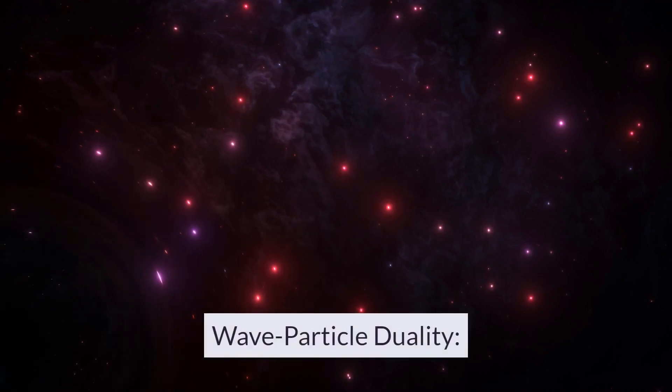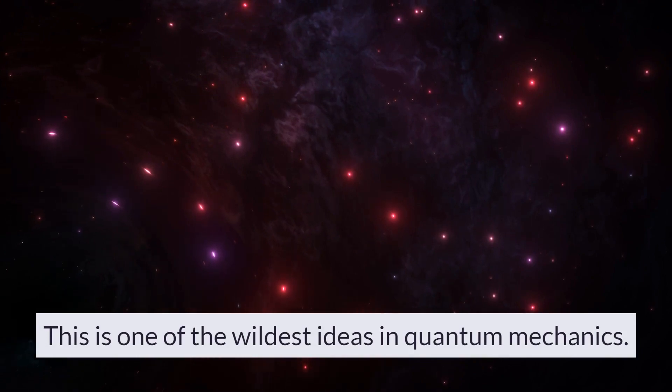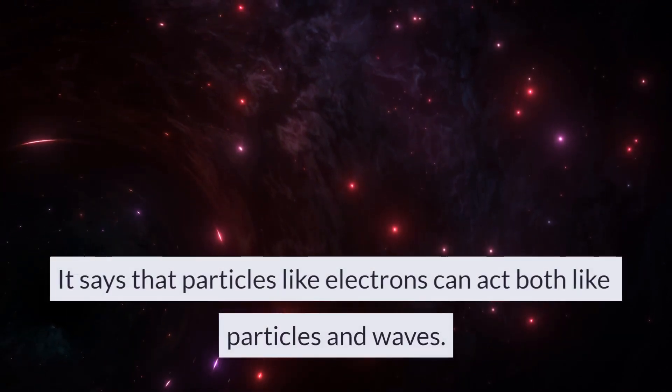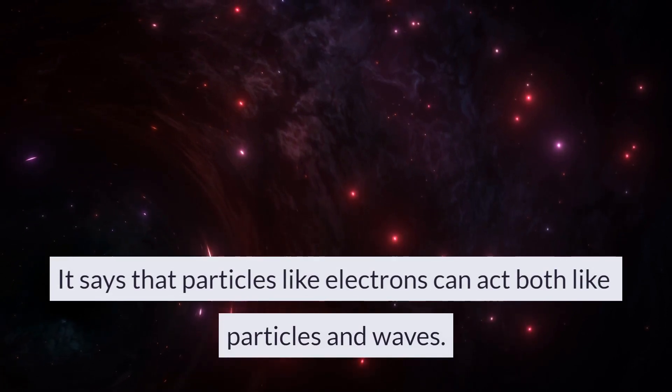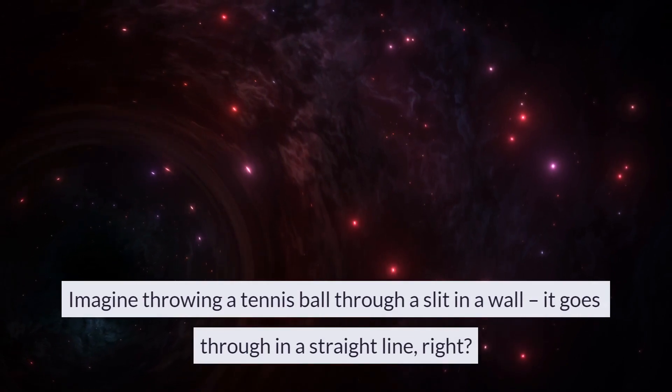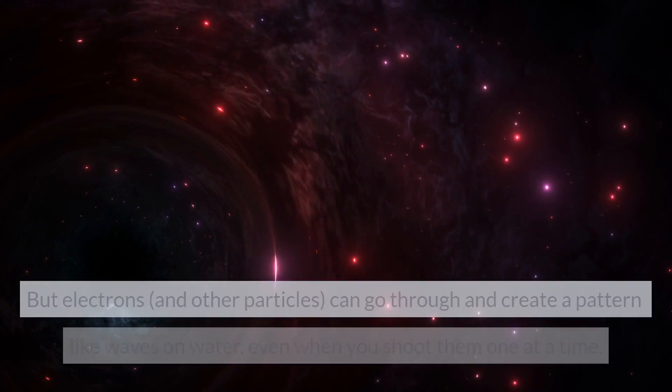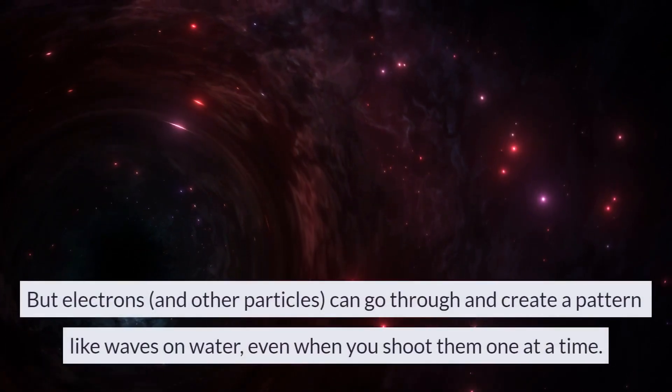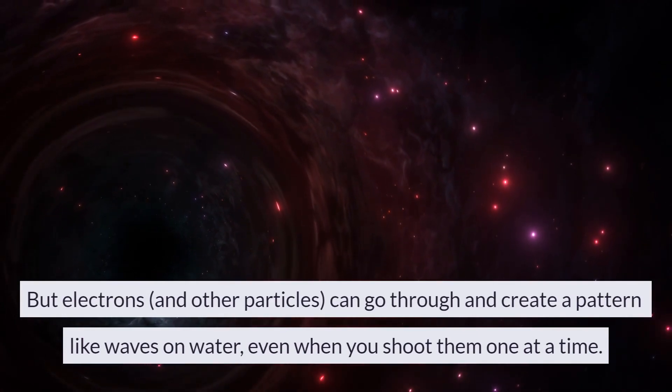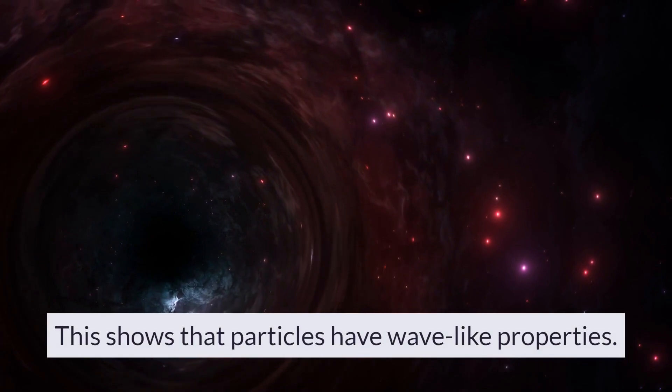Wave-particle duality is one of the wildest ideas in quantum mechanics. It says that particles like electrons can act both like particles and waves. Imagine throwing a tennis ball through a slit in a wall, it goes through in a straight line, right? But electrons, and other particles, can go through and create a pattern like waves on water, even when you shoot them one at a time. This shows that particles have wave-like properties.